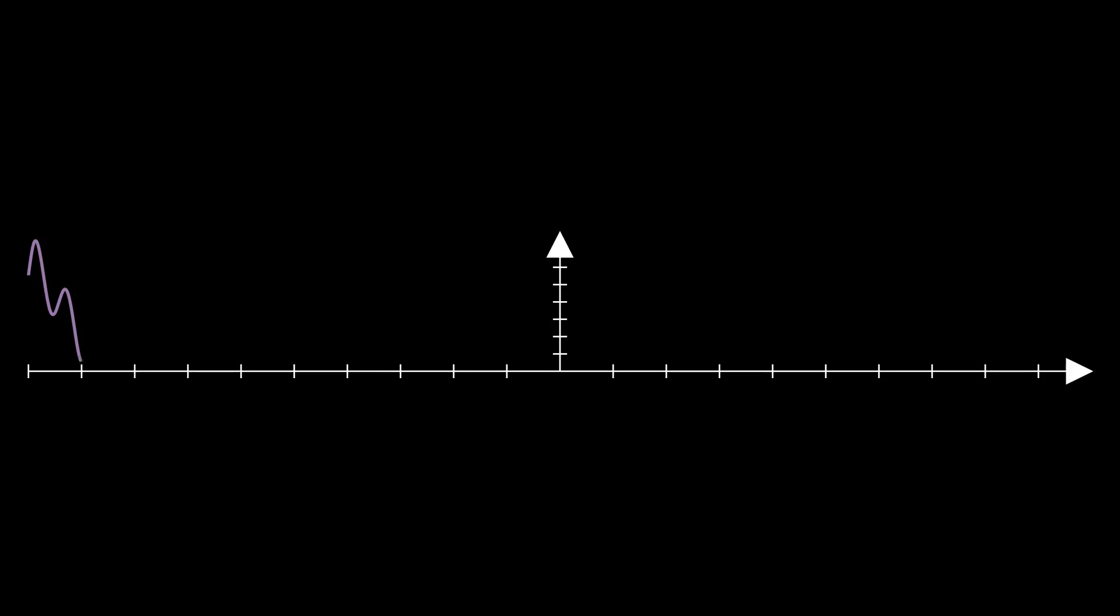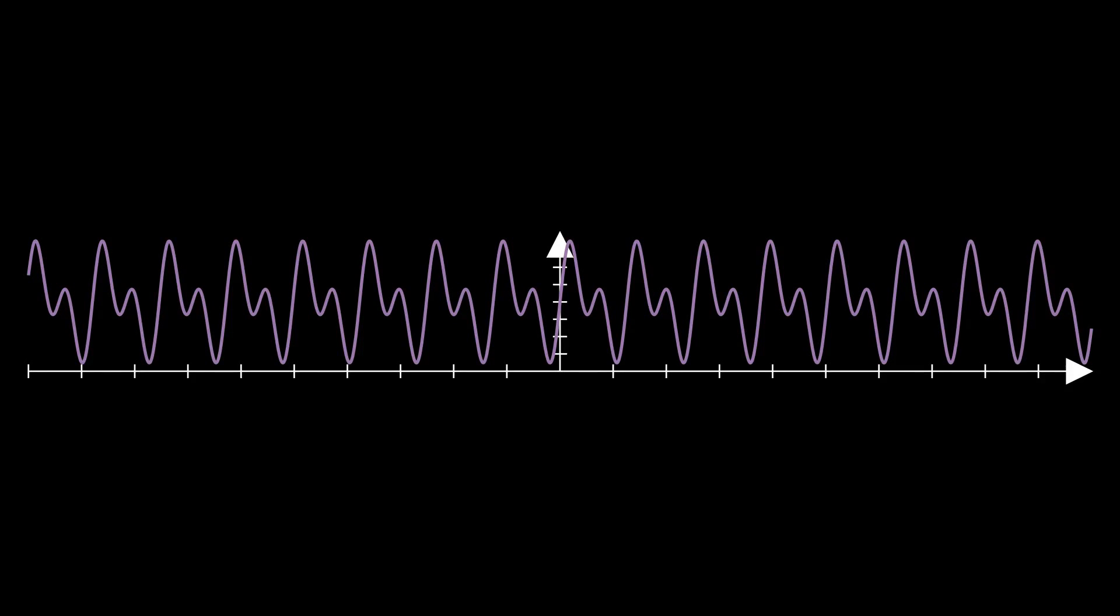Now suppose we started off with the final wave. The question is how do we find the pure waves that we use to make this? Or in other words, how do we go reverse and find the waves that constructed this?